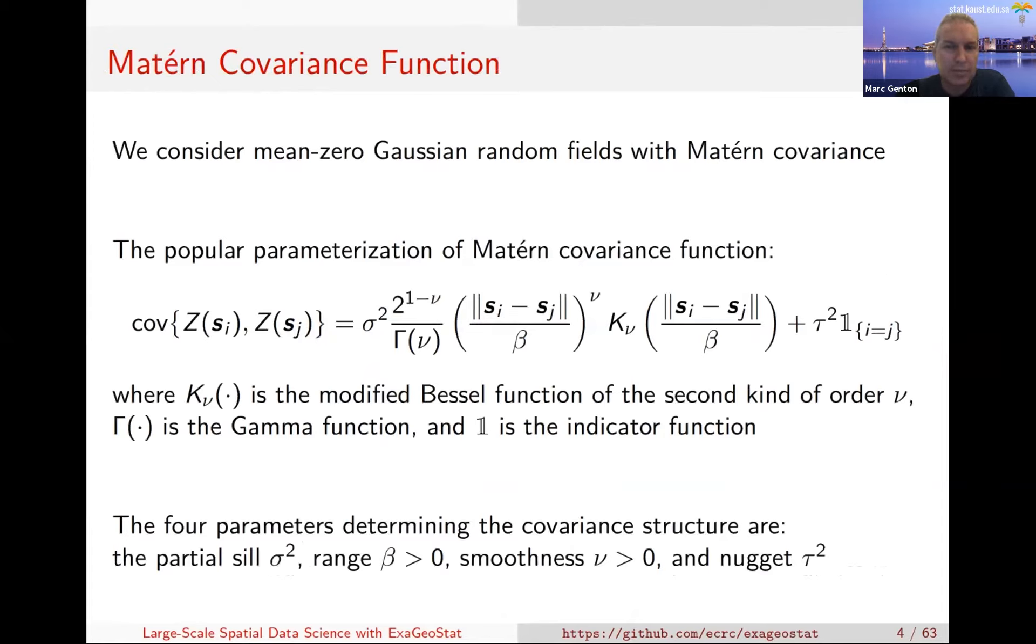The framework is a simple one. We're going to look at Gaussian random field, mean zero, with a Matern covariance function. The covariance between variables at two different locations S_i, S_j has this form, k is a Bessel function. There are four parameters: sigma squared the partial sill, beta the range, nu controlling the smoothness, and tau squared the nugget effect. If tau is zero, there's no noise, then sigma squared is directly the variance.